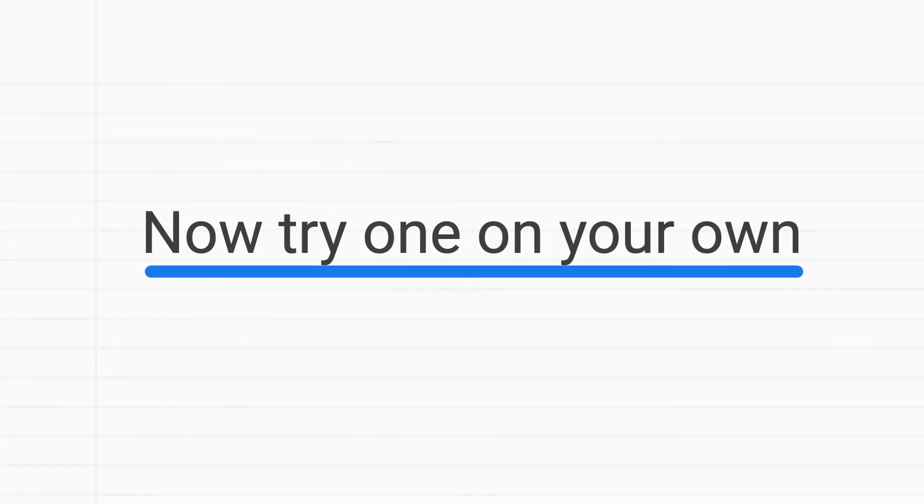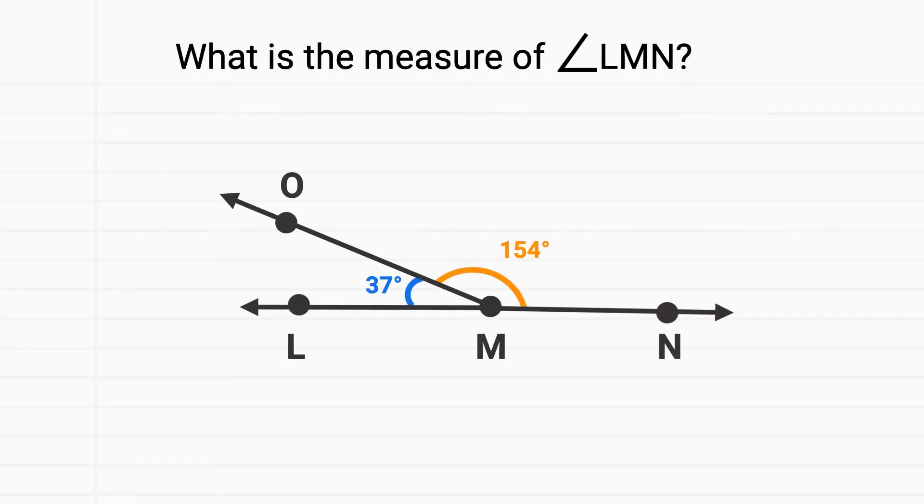Now it's time for you to try one on your own. What is the measure of angle LMN? Well LMN is made of two pieces. We can look at LMO in blue, which measures 37 degrees, and then we can look at angle OMN in orange, which measures 154 degrees.